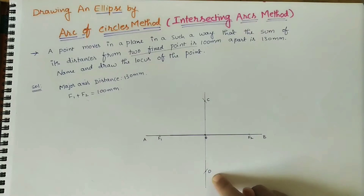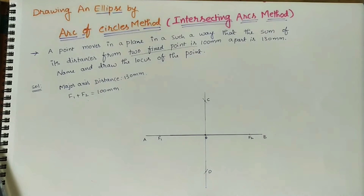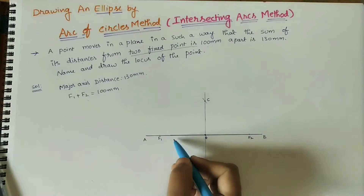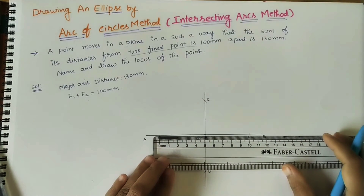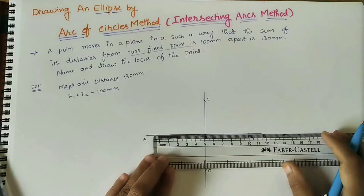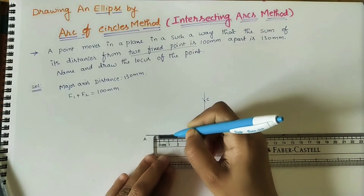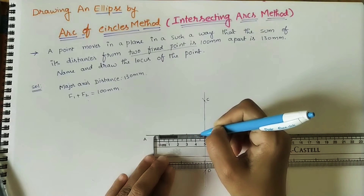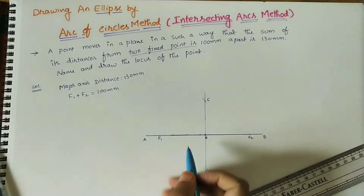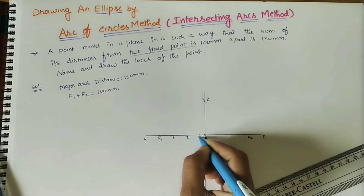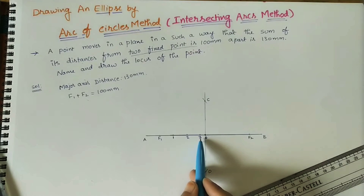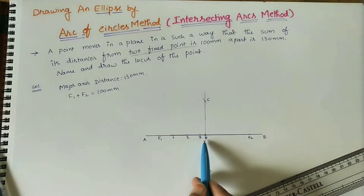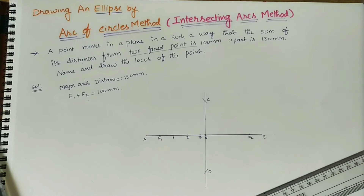After getting the minor axis points C and D, we now need to draw the ellipse, for which we need some intermediate points. After the fixed point, we can take any distance and any number of points — 1, 2, 3, 4, and so on. Here I am taking 3 points at equal distance of 1.5 cm apart, marked between F1 and A (and similarly between F2 and B). We can also take unequal distances or more points such as 5 or 6.